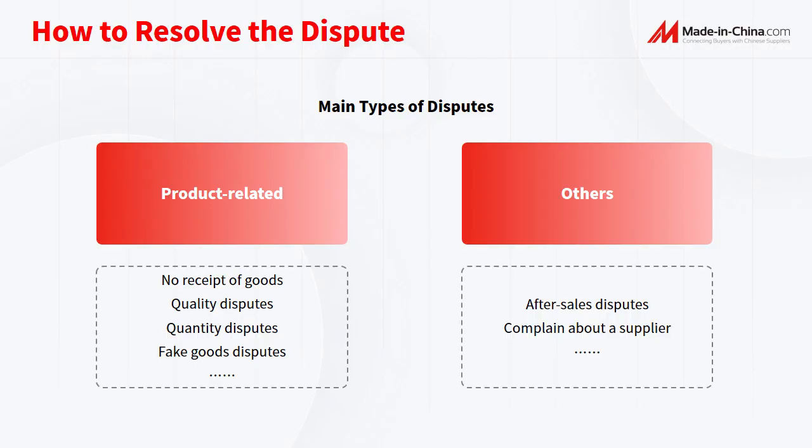Today, let's talk about the main types of disputes. There are generally two types. One is related to the product, such as no receipt of goods, quality disputes, quantity disputes, or fake goods disputes, and so on.